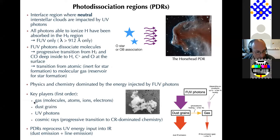PDRs are the regions where you find the very important transition from atomic gas, which is inert for star formation, to molecular gas, which is the reservoir of matter for star formation. In a PDR, the physics and chemistry will be dominated by the energy injected by FUV photons. The key players are the gas — ranging from molecules to ions — free electrons from ionized species like carbon or sulfur, dust grains, UV photons from stars, and cosmic rays. Cosmic rays are usually considered the dominant energy source deep inside molecular clouds, but in a PDR there is a transition zone.